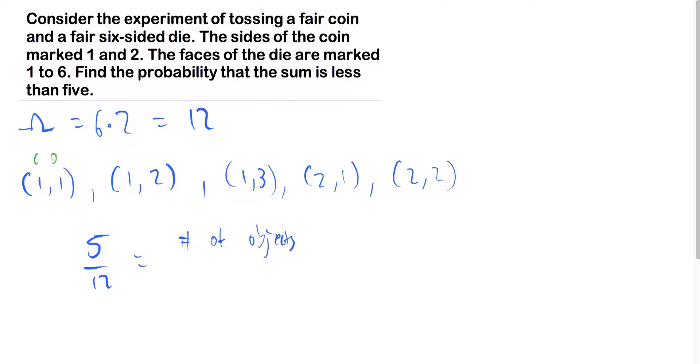objects - in our case, our object is the sum of the side of the coin and the face of the die - number of objects we want over the total number of possibilities that there are, which is our sample space. I could write here sample space size, and that's it.